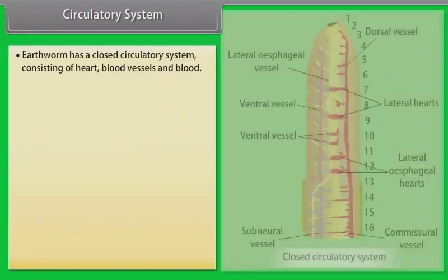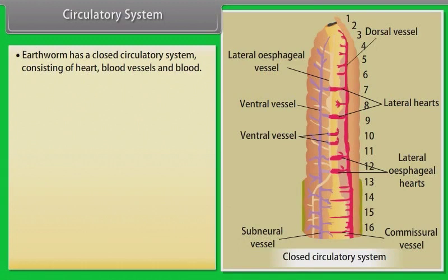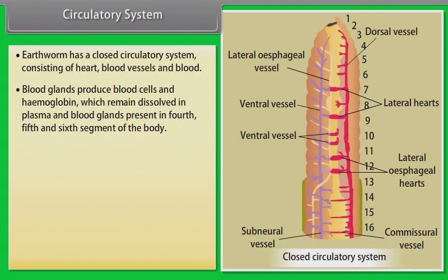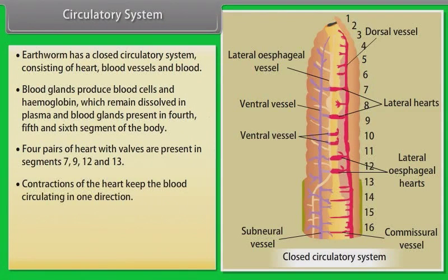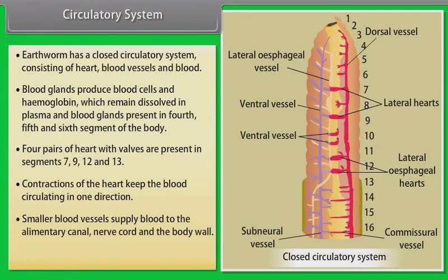Earthworm has a closed circulatory system consisting of heart, blood vessels, and blood. Blood glands produce blood cells and haemoglobin, which remain dissolved in plasma. Blood glands are present in the fourth, fifth and sixth segments. Four pairs of hearts with valves are present in segments seven, nine, twelve and thirteen. Contractions of the heart keep blood circulating in one direction. Smaller blood vessels supply blood to the alimentary canal, nerve cord, and body wall. Blood cells are phagocytic in nature.